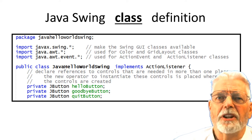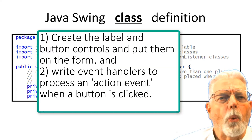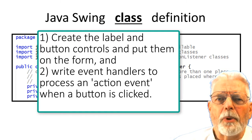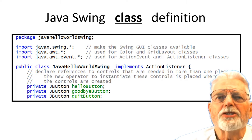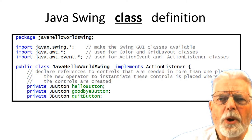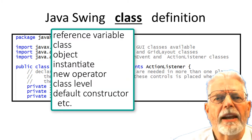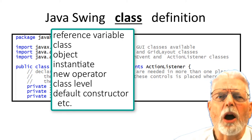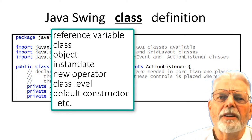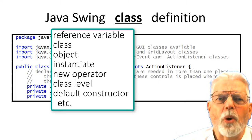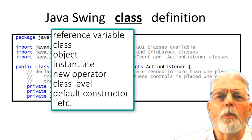We need to do two things to get these GUI apps to work: create the label and button controls and put them on the form, and write the event handlers to process an action event when the button is clicked. In this discussion, I am using several object-oriented programming terms that may be new to you such as reference variables, class, object, instantiate, new operator, class level, default constructor, etc. As we continue to use these OOP terms, they will become more familiar to you.